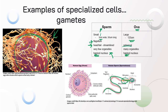Ova are more spherical and have many, many organelles, plus a haploid nucleus. All of the mitochondria in your body come from the egg that made you. So we can look at our mitochondrial DNA as a very narrow, tall, and skinny family tree.